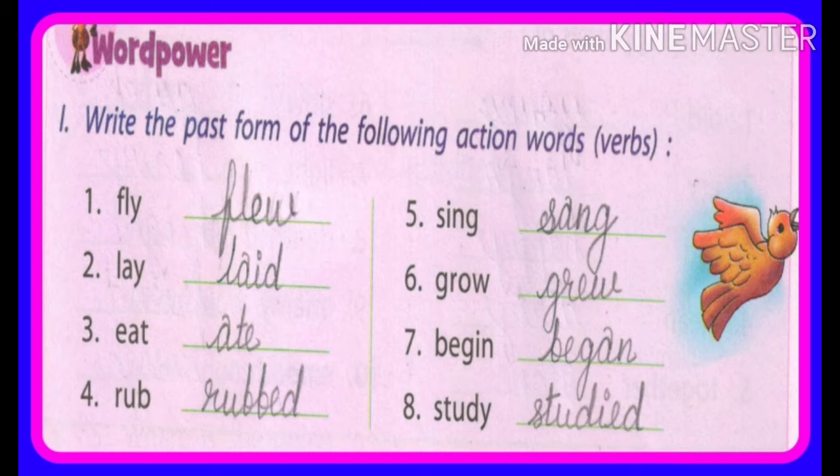Number five: Sing — sang. Number six: Grow — grew. Number seven: Begin — begun. Number eight: Study — studied.